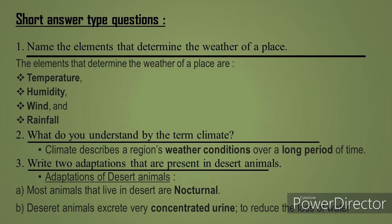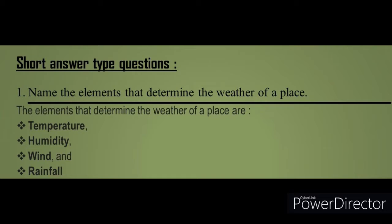Now for the short answer type questions. The first question: name the elements that determine the weather of a place. The elements that determine the weather of a place include: one, temperature; two, humidity; three, wind; and four, rainfall.